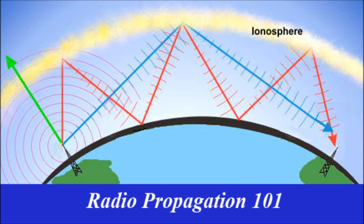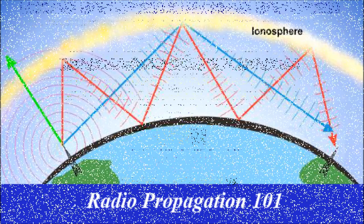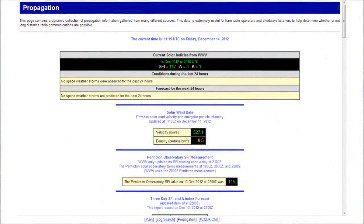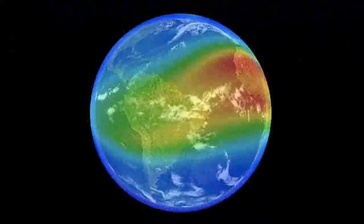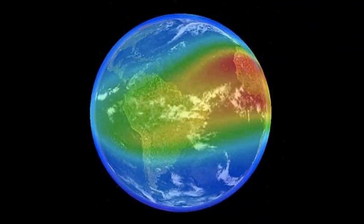This video is titled Radio Propagation 101. It will give you a basic understanding of radio propagation. As ham radio operators, we've all seen propagation reports like this — but what do they really mean? High-frequency radio propagation depends on many factors. To begin to understand it, we need to know about the ionosphere and how current solar conditions affect it.